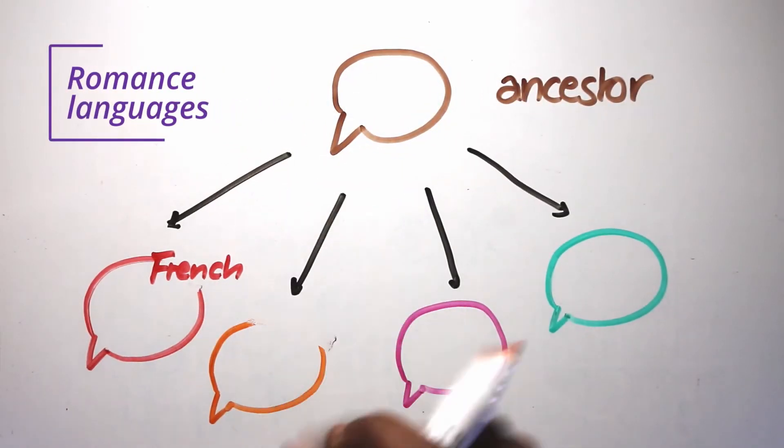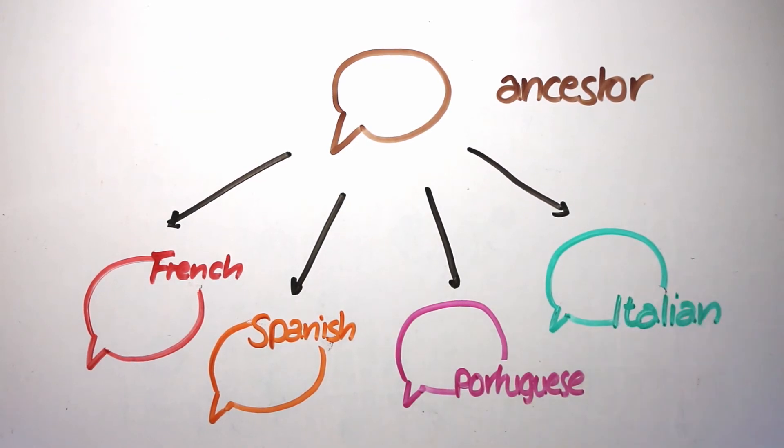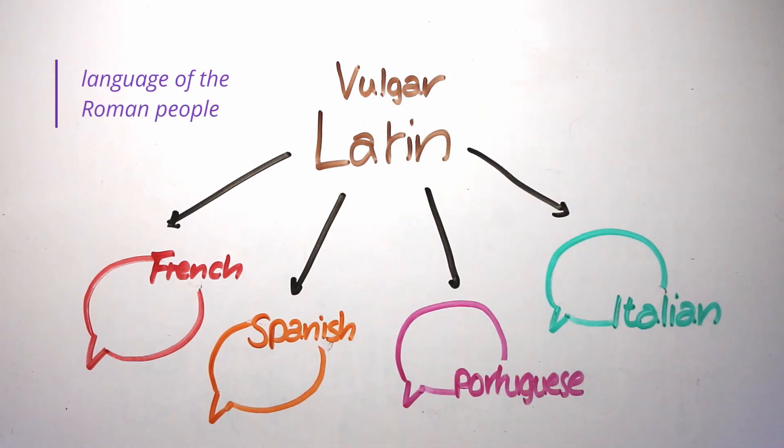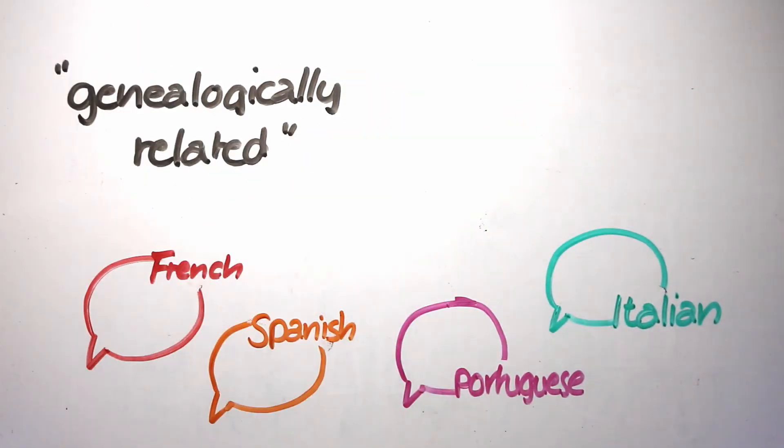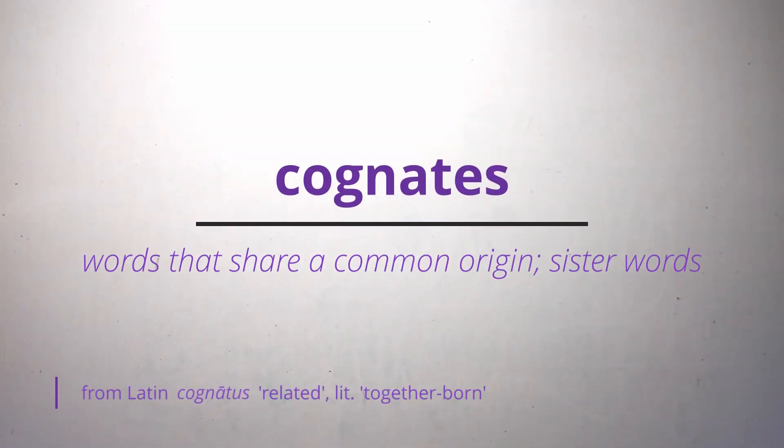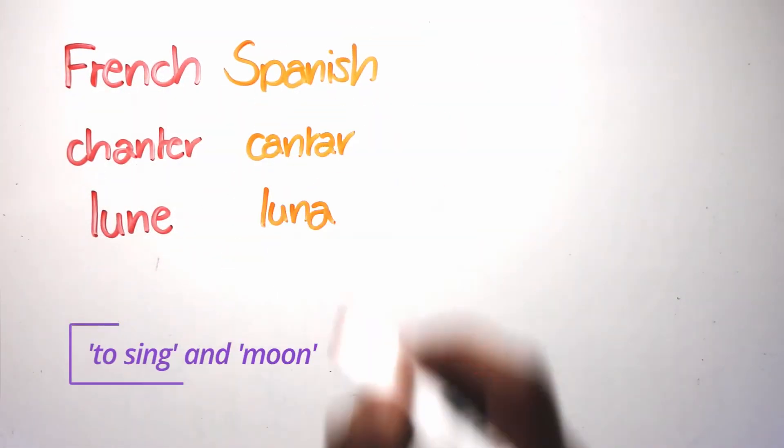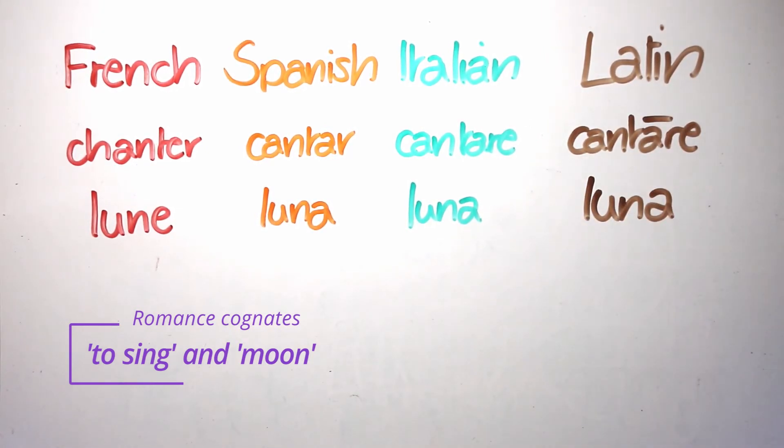A good example of this are the Romance languages, such as French, Spanish, Portuguese and Italian. All of these are descended from Vulgar Latin, the language spoken by the people of the Roman Republic and Empire since around 100 BC. All the Romance languages are genealogically related to each other, and so can be called sister languages. You can see this clearly in the sister words or cognates amongst these languages, such as the word for to sing and moon, especially if you compare against the Latin ancestor words.